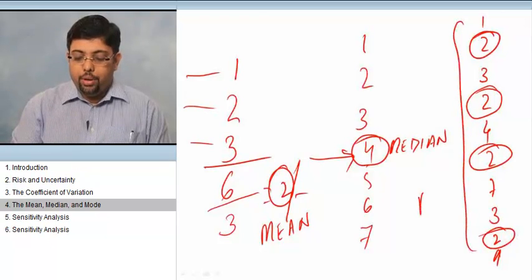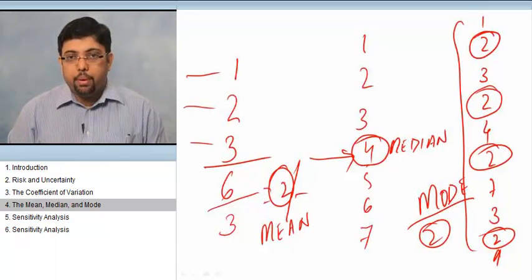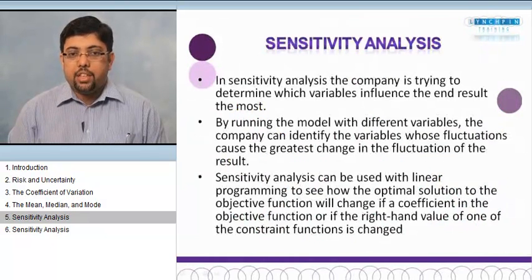In this one, what is repetitive at max? 2 is something that is getting repetitive again and again, so the mode of this data is 2. This is the difference between mean, median, and mode. Sensitivity analysis.